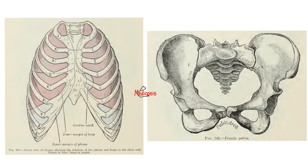Some bones are counted as one but actually have several pieces. For example, the sternum is counted as one bone but has three pieces: the manubrium, the body of the sternum, and the xiphoid process. Similarly, the hip bone is counted as one but is made of three pieces: the ilium, the ischium, and the pubis.